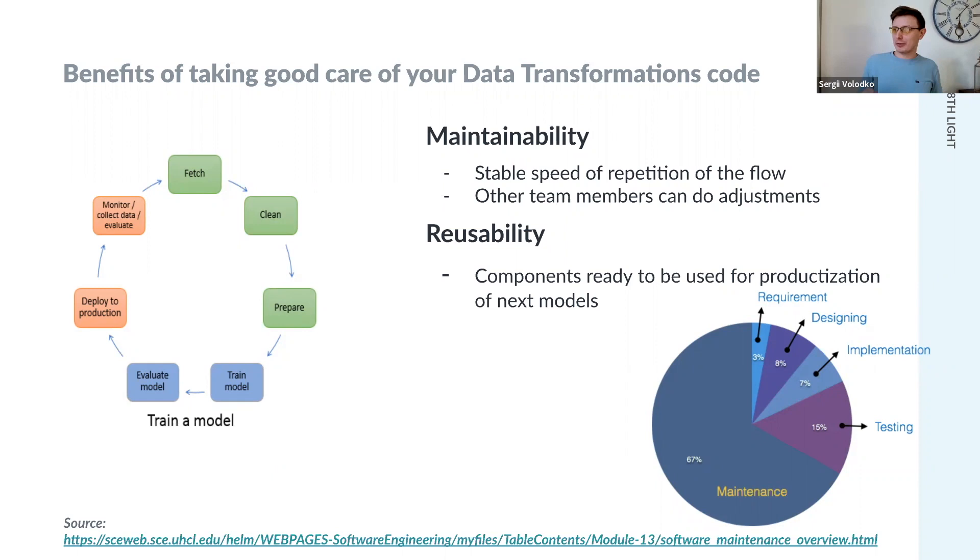The benefits of taking good care of your data transformations is maintainability. Once we delivered it and once it brings value, we need to maintain it. We're going to need to do this cycle again and again. And if we organize our transformations well, the repetition of these first steps are going to be way faster. What is even more important, the changes in these green bars could be made not by data scientists, but by the software engineer or data engineer. And of course, reusability. Once we extracted those transformations into granular functions, we'll be able to reuse those functions for other models and other projects.